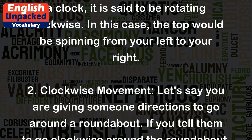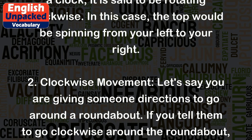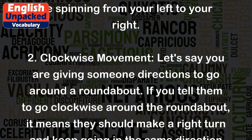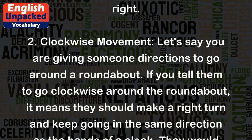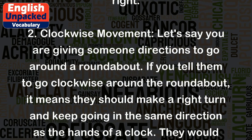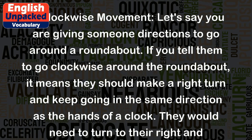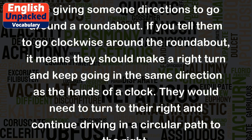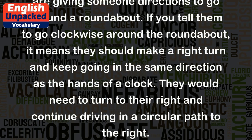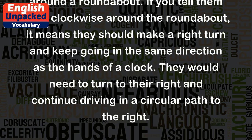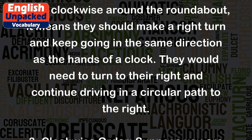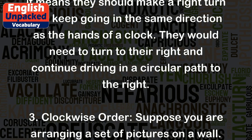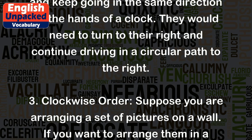2. Clockwise movement: Let's say you are giving someone directions to go around a roundabout. If you tell them to go clockwise around the roundabout, it means they should make a right turn and keep going in the same direction as the hands of a clock. They would need to turn to their right and continue driving in a circular path to the right.